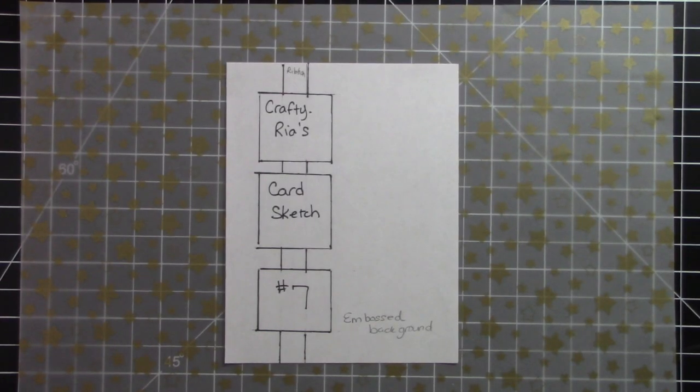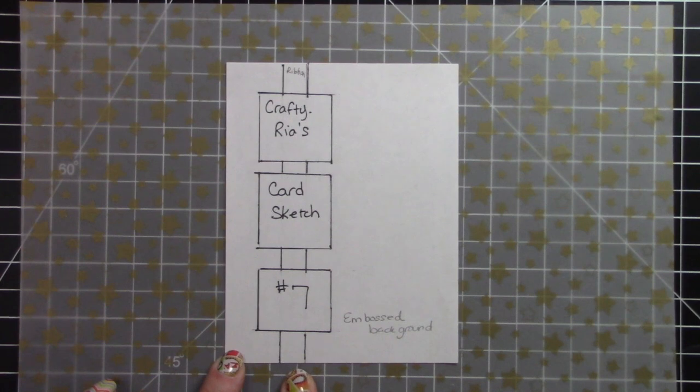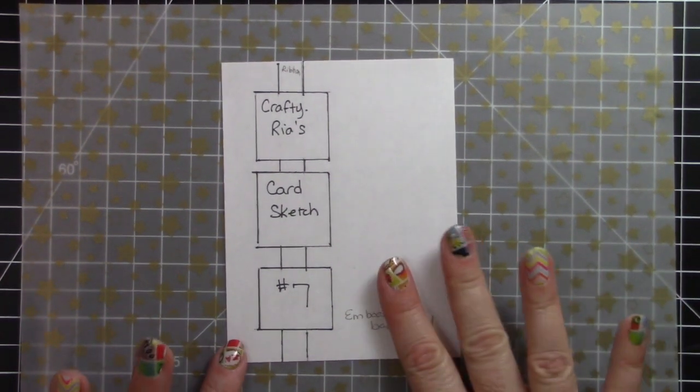Hello, it's Crafty Rhea, and I'm back again today with another video. Today's video will feature card sketch number seven. This features three squares, a piece of ribbon, and an embossed or decorative background of some sort.